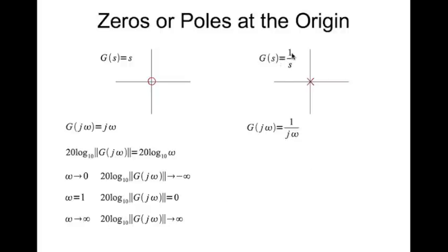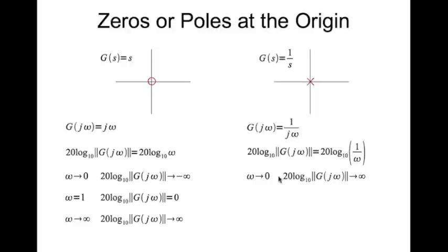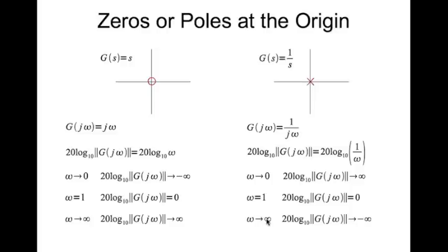The case with the pole at the origin is almost the same. You have your transfer function 1 divided by j*omega. You take the magnitude in decibels and get this expression. When omega tends to zero, the magnitude tends to infinity. When omega equals 1, the expression equals 1 and log of 1 is 0, therefore the magnitude tends to 0 dB. When omega tends to infinity, the magnitude in decibels tends to minus infinity.